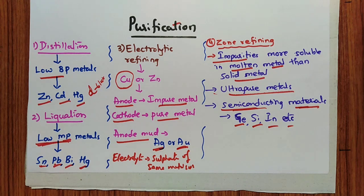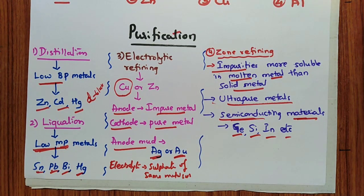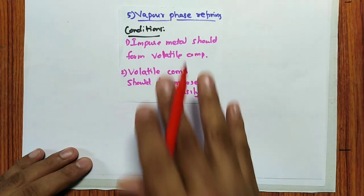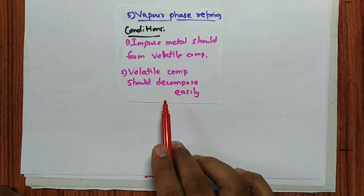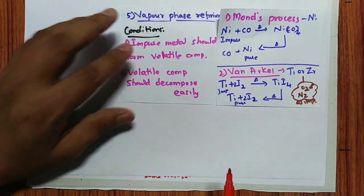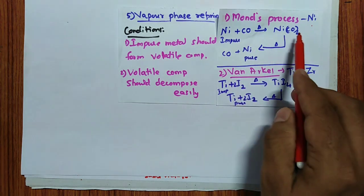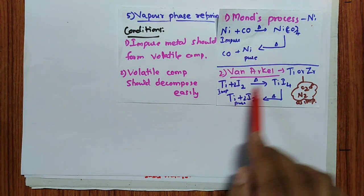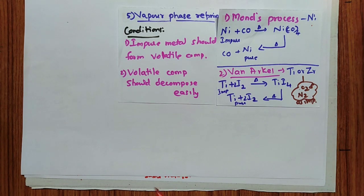Fifth method: vapor phase refining. Conditions: the impure metal must form a volatile complex, and that complex must undergo easy decomposition. Two examples: Mond process — used for nickel; nickel reacts with CO to form nickel carbonyl, which on heating gives pure nickel. Van Arkel method — used for titanium or zirconium; iodine is used as the reagent; impurities are oxygen and nitrogen gases. This was once asked in CET.